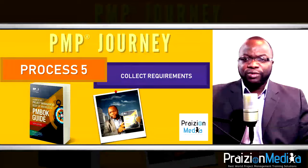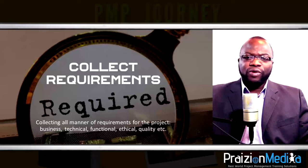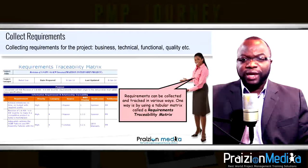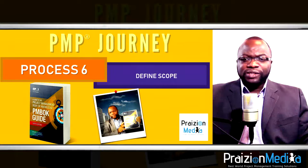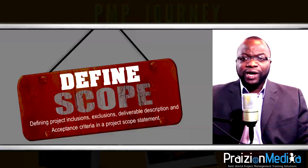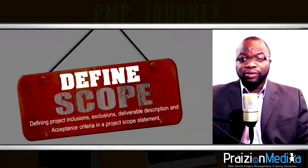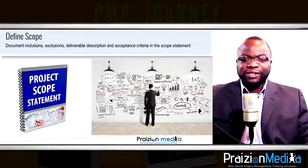Process 5: Collect requirements. We want to collect all the requirements — business, technical, functional, and so on — to get a good understanding of what the stakeholders and customer want. Process 6: Define scope. Once we understand what the customer wants, we need to define the parameters of the project — what is in the project and what is not — to reach that end state we're looking for.